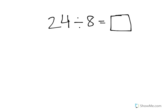Now the way that repeated subtraction works is you start with your total and you subtract the number of groups until you end up with 0.